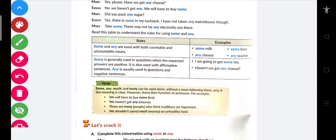Let's try to perfect it with this note box. Some, any, much, many can be used alone without a noun following them if the meaning is clear. We can avoid writing the noun after it. However, these then function as pronouns. For example, when there is no noun after it, then which noun will it qualify or modify?